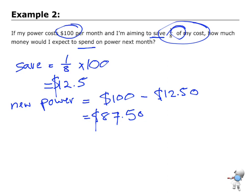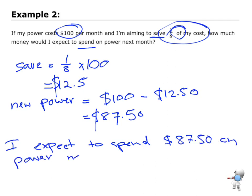Also, word problem means I need to give a word answer. So I'm going to say, I expect to spend $87.50 on power next month. And there's my answer.